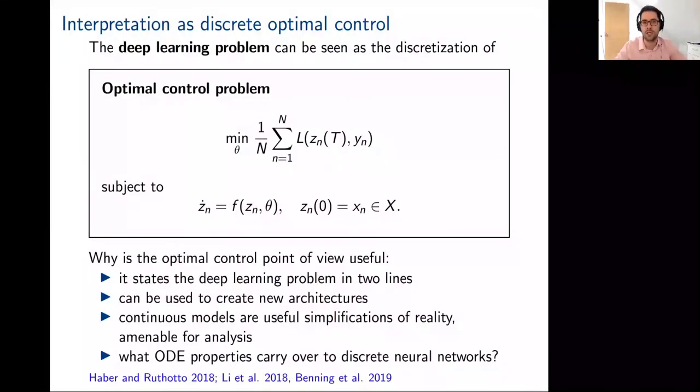We can relate discrete deep learning architectures with a continuous deep learning architecture which is nothing else than an ODE. This means we can formulate a continuous deep learning problem which is nothing else than an optimal control problem. We want to minimize our objective so that the final time point of these trajectories which follow a certain ODE should be as close as possible to our data yn, with the input of these trajectories being our data xn.